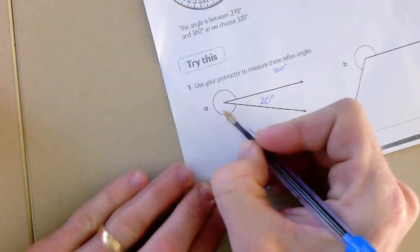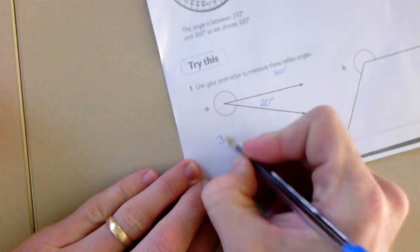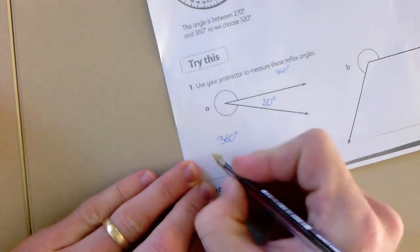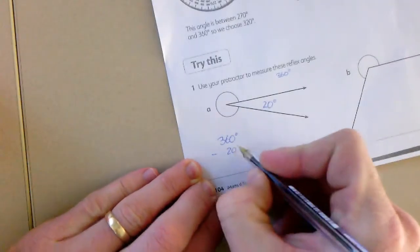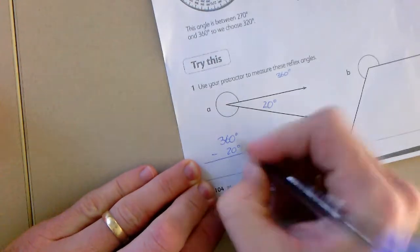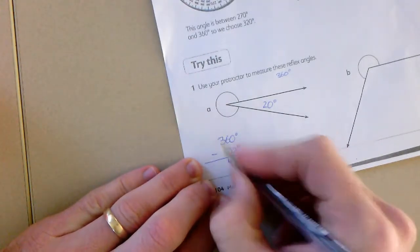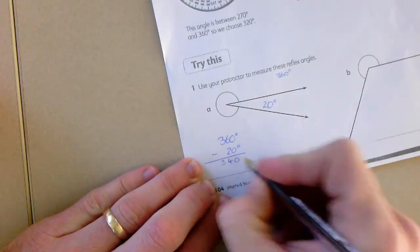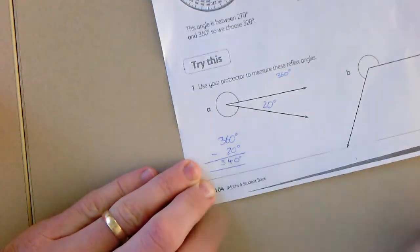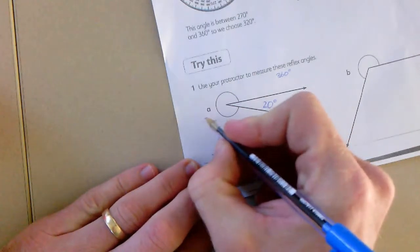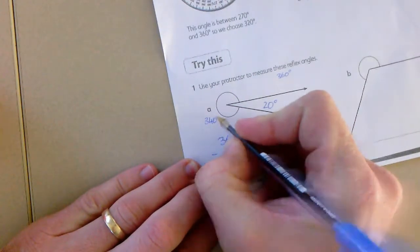To find the reflex angle, I would do 360 degrees take away 20 degrees. 0 take 0, 0. 6 take 2 is 4. 3 take nothing is 3. Then I end up with a reflex angle of 340 degrees.